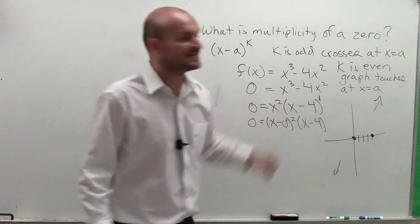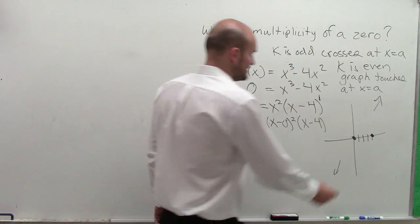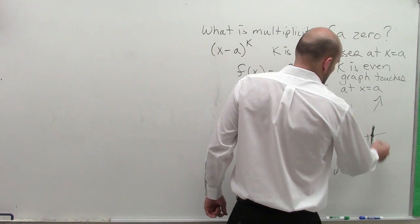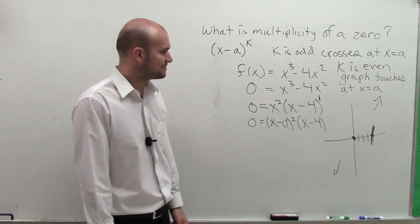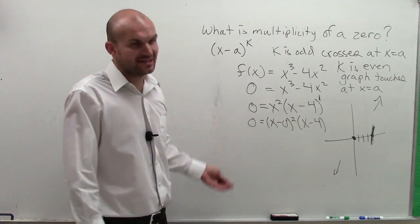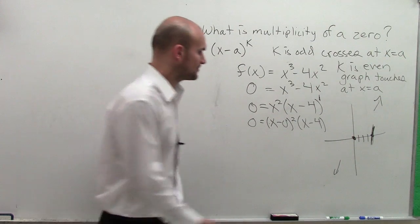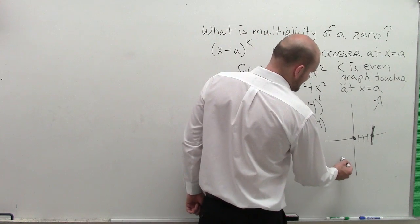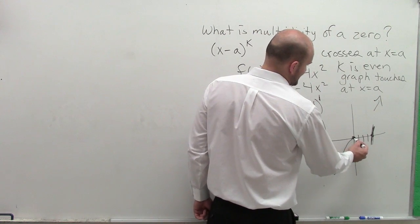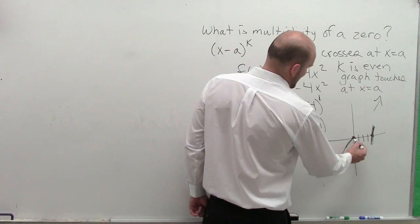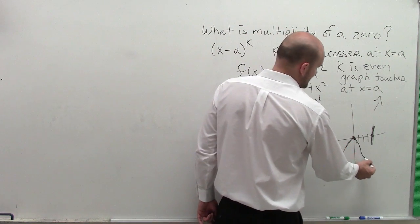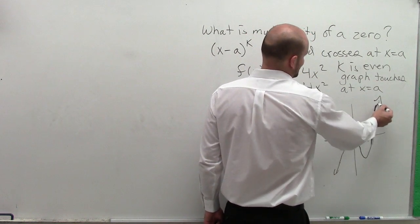So when it's odd multiplicity, it crosses. At x = 4, since it's odd multiplicity, it's going to cross. But at x = 0 with even multiplicity, it just touches. Using my end behavior, since it has to go up to zero, if it's just going to touch, it rebounds back down. It can't cross, so it just touches, rebounds, and then the graph looks something like that.